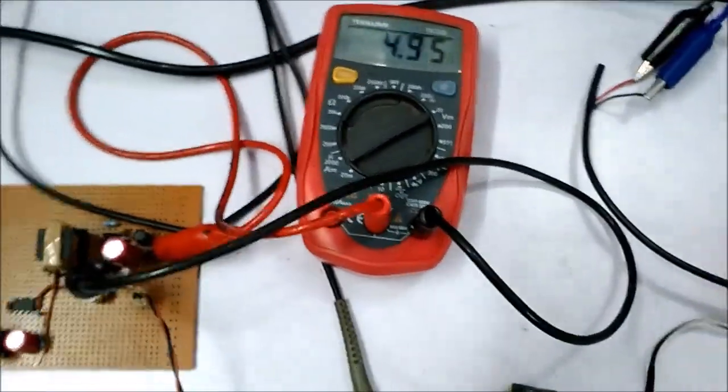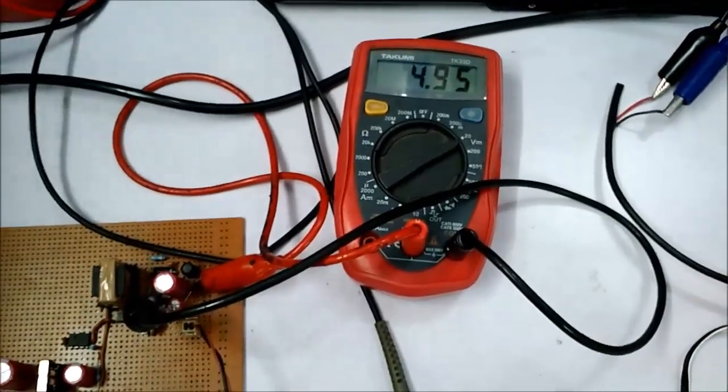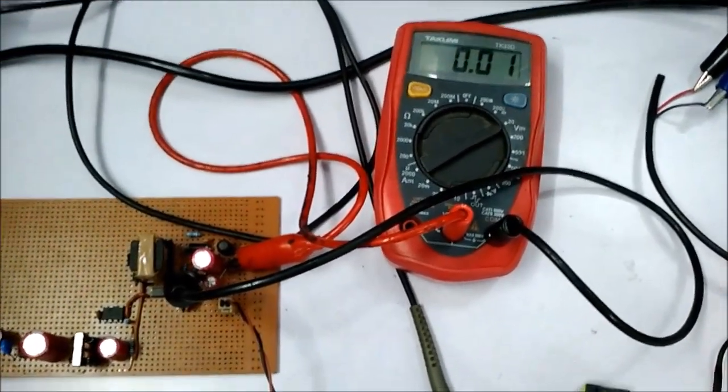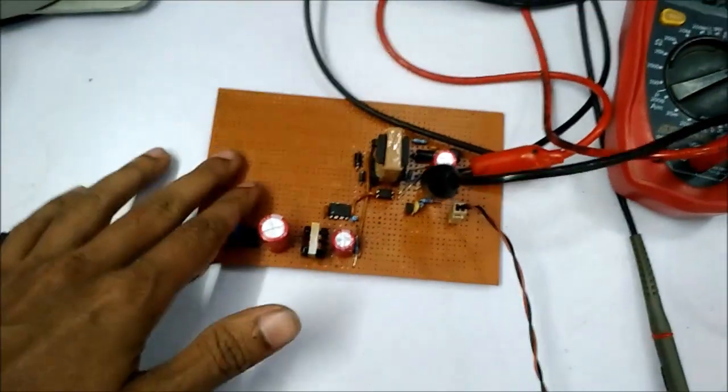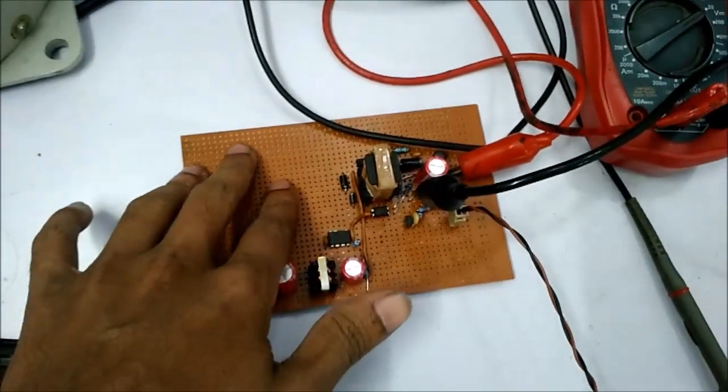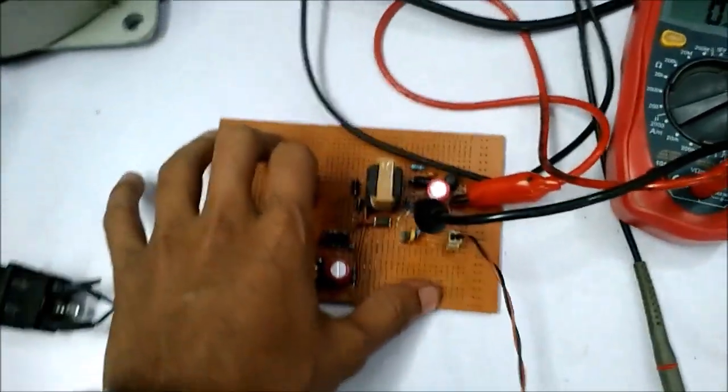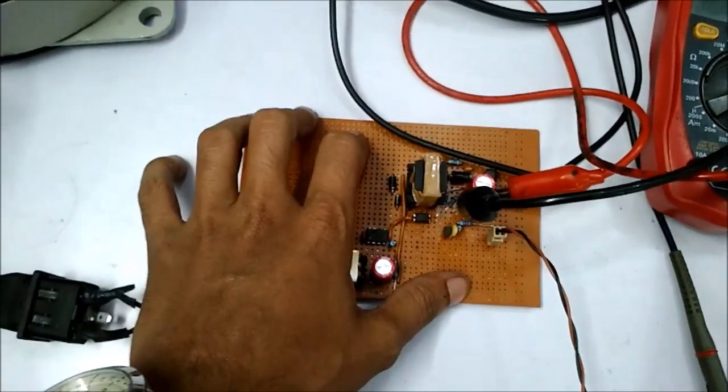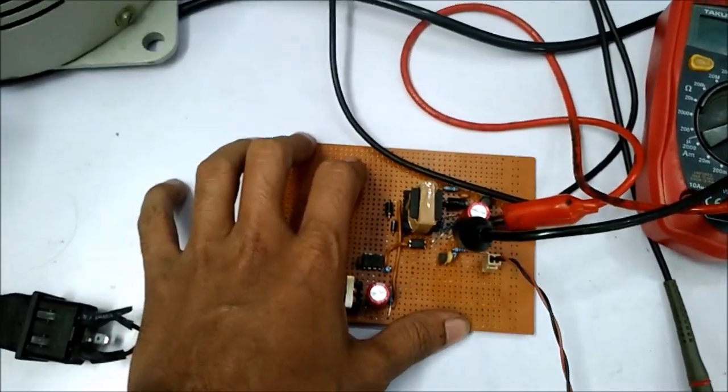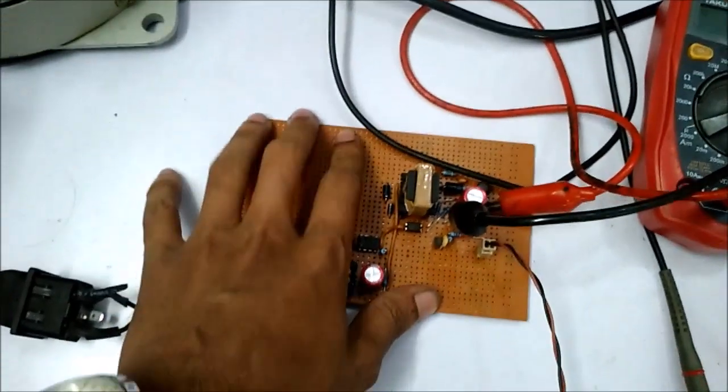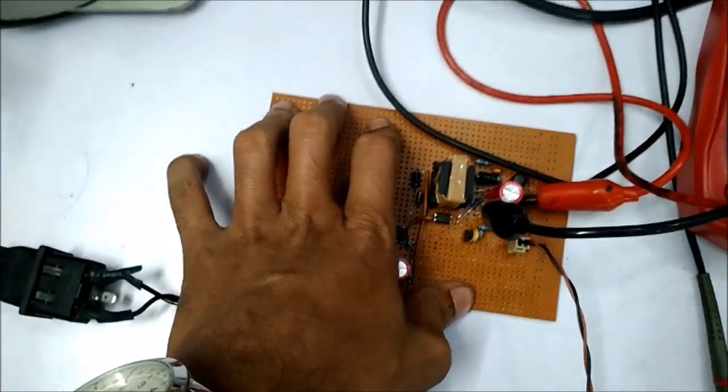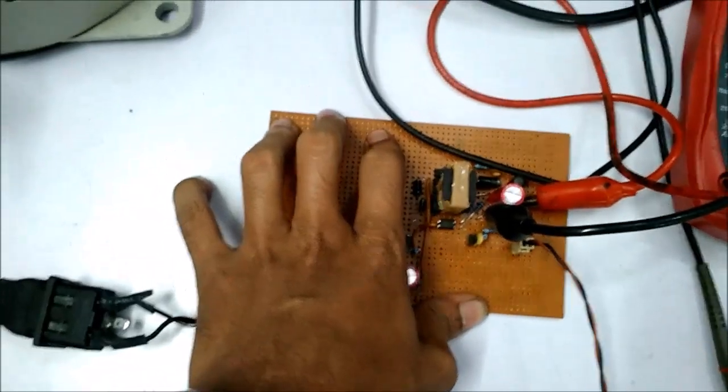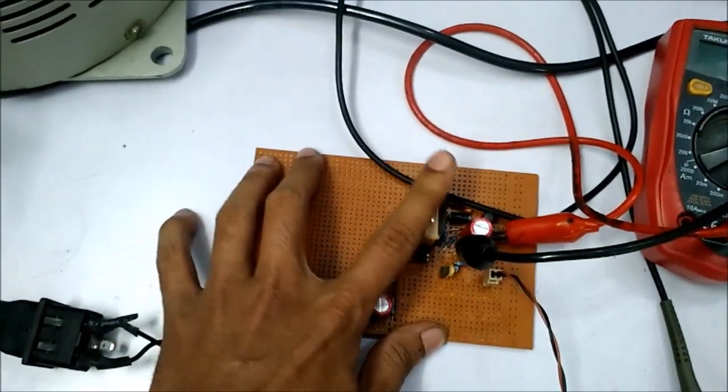So what is the reason behind the high output ripple across the output? This is because of two factors. One is the PCB, poor PCB designing. Because it is not a proper PCB, it is a veroboard which is not suitable for SMPS designing, just because of the proper ground plane. It will induce noises. It will induce ripples across the output for ground bounce issue. And the second thing is...